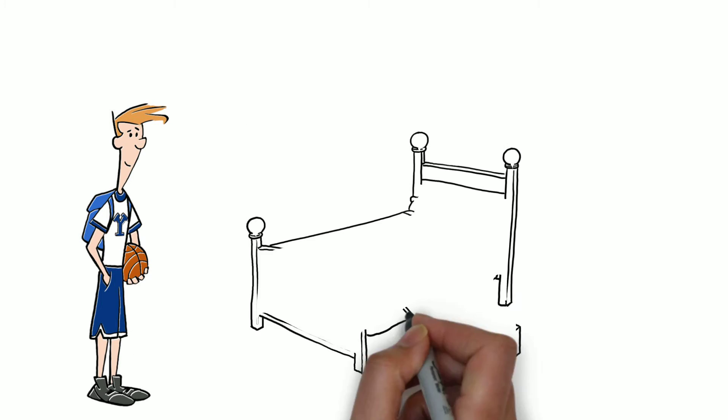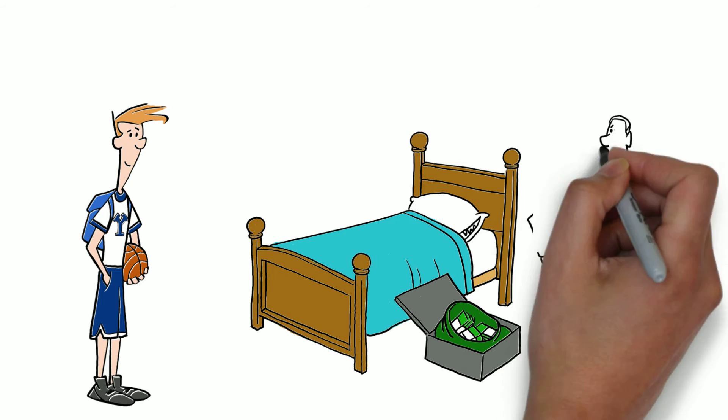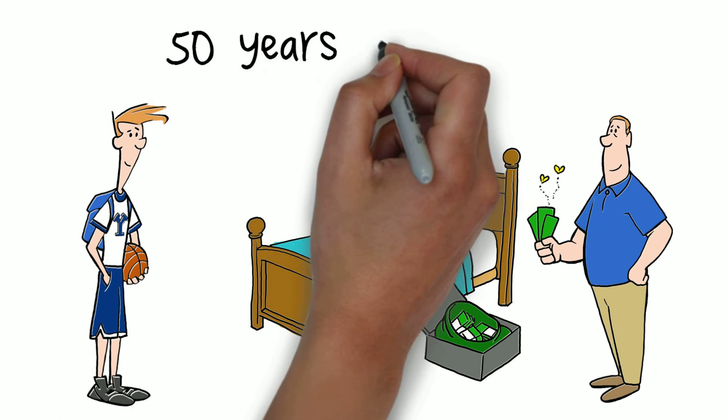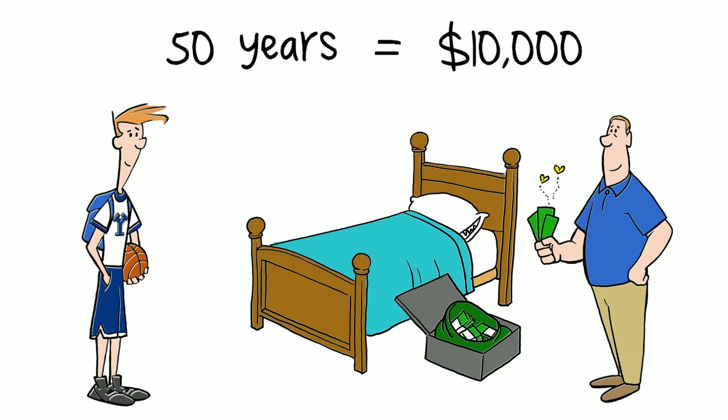The first student does not trust the financial system, and he puts the money under his bed in a strong box. In 50 years, he still has $10,000.